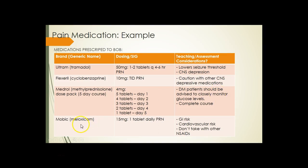Mobic is an NSAID, so there are GI risks. Importantly, those with cardiovascular risks — such as those who have had heart attacks or strokes — should not use NSAIDs long-term, as it increases their risk. Do not take with other NSAIDs. There is also an article on Blackboard about using NSAIDs with cardiovascular risk. NSAIDs also raise blood pressure, so those with chronic hypertension should avoid chronic NSAID use.